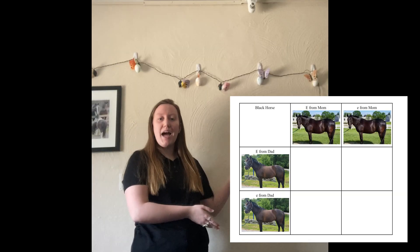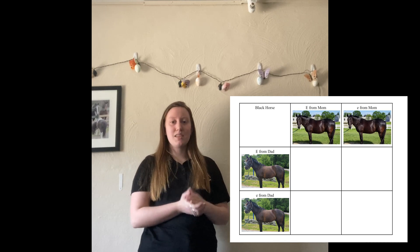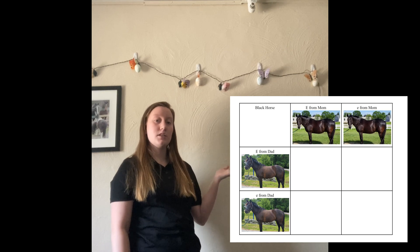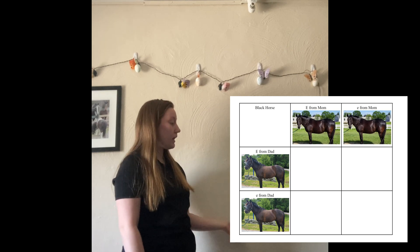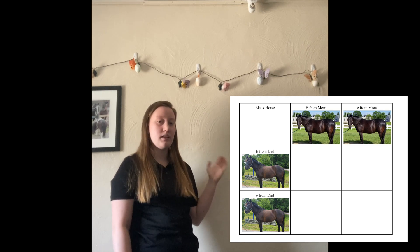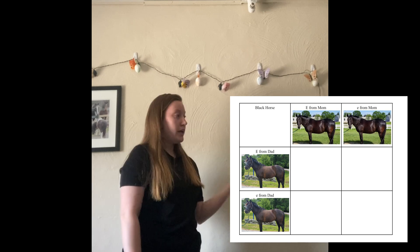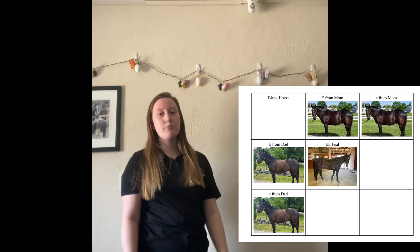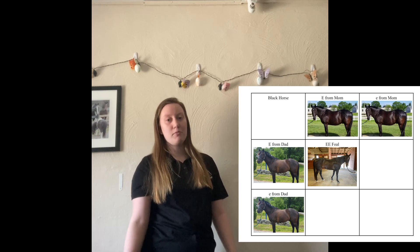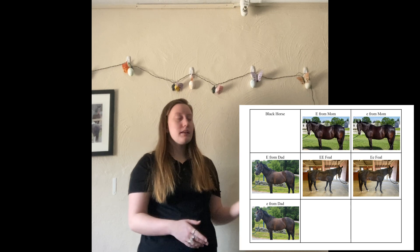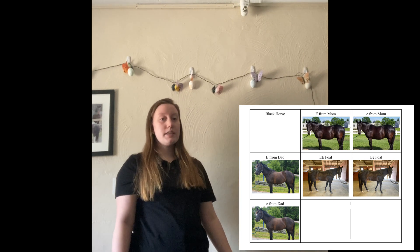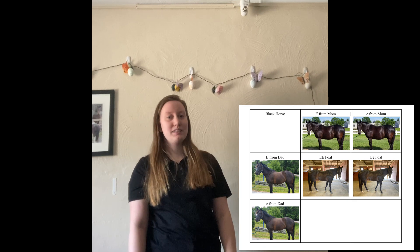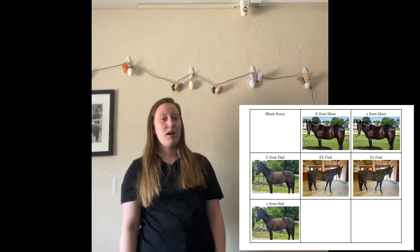So here we have the black Punnett square. This is a little different than what I did with the bay coloration. For the mom I have the heterozygous condition — dominant E and recessive E — and for the dad I also have the heterozygous condition — dominant E and recessive E. In the first box, you take the dominant E from mom and the dominant E from dad, so the foal will be homozygous dominant for E. In the second box, you take the dominant E from dad and the recessive E from mom, which means that foal will be heterozygous — they'll still be black.